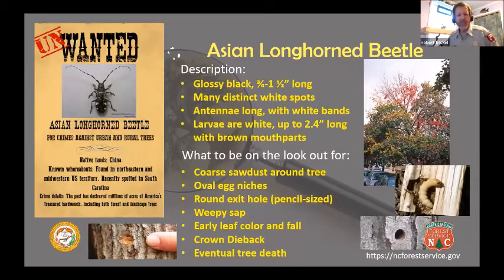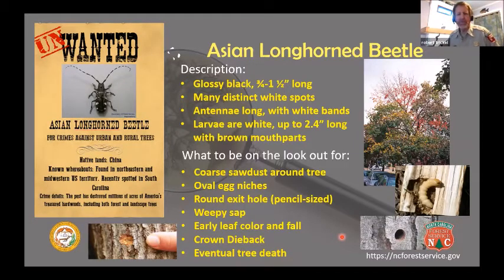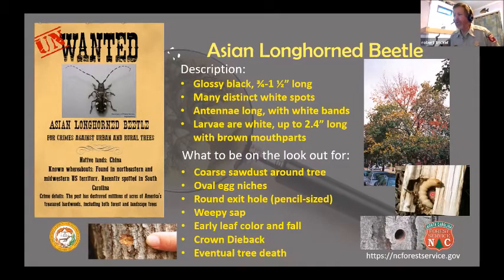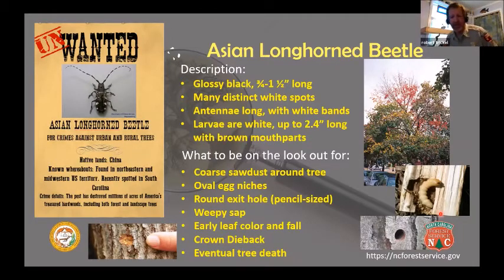The adult is a glossy black, large beetle — three-quarters of an inch to an inch and a half long — with a lot of white dots on it. The antennas are very long with white bands in each segment. The larvae are white, up to about two and a half inches long — they're the part that does the damage. They bore into the tree and tear up the wood.